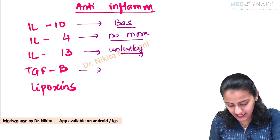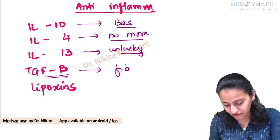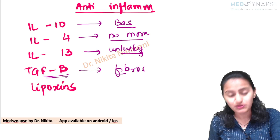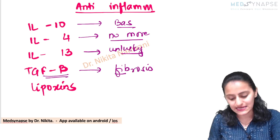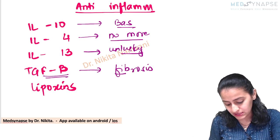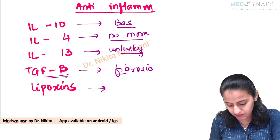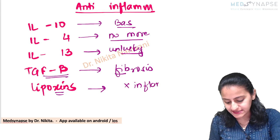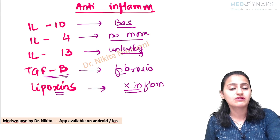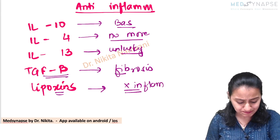TGF-beta — remember 'FB' stands for fibrosis-stimulating. Fibrosis means healing, so TGF-beta is anti-inflammatory. Lipoxins — remember 'XN' means no inflammation. So these are your anti-inflammatory cytokines.